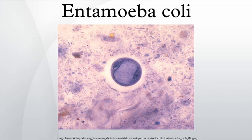Excystation happens once the cysts are ingested and travel to the large intestine. E. coli trophozoites can be distinguished by their wide and tapered pseudopodia. They are often mistaken for E. histolytica due to their overlap in size.